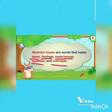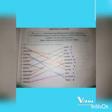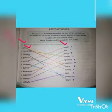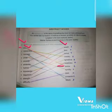Abstract nouns ایسے الفاظ ہیں جو خیالات، احساسات، تجربات، خصوصیات اور تصورات کو نام دیتے ہیں. Let's see what's in our book related to abstract nouns. The first question is: match the abstract nouns with their opposites. For example, joy — یعنی خوشی — and its opposite is sorrow — غم. I have used different colors and marked numbers here so you could trace easily.